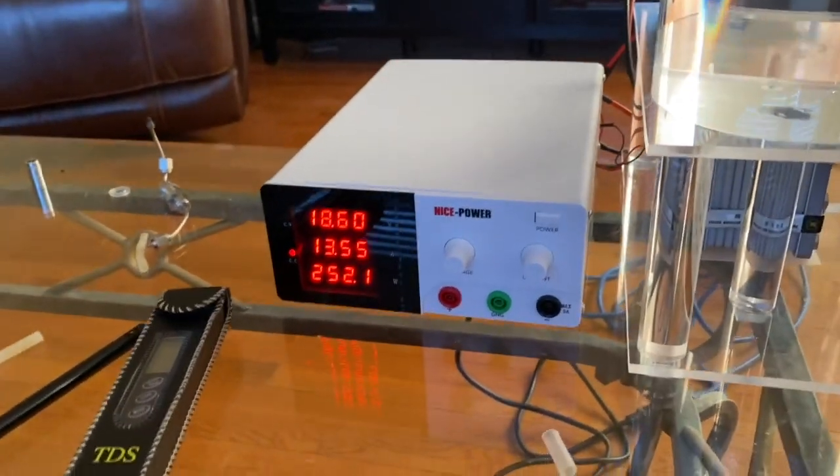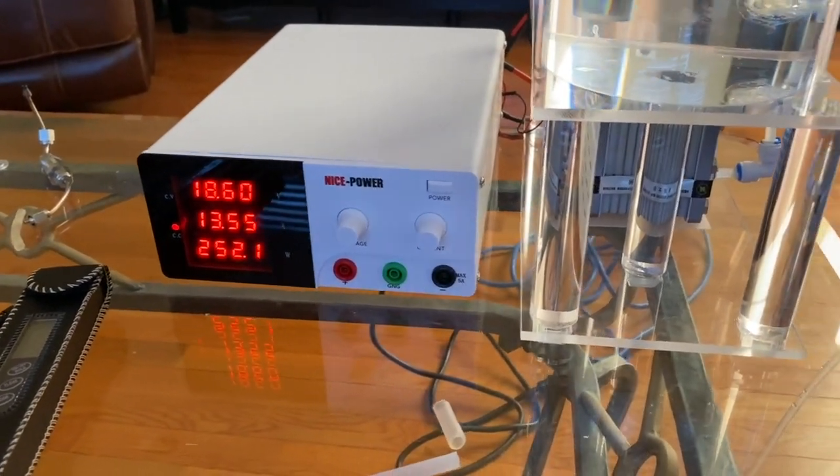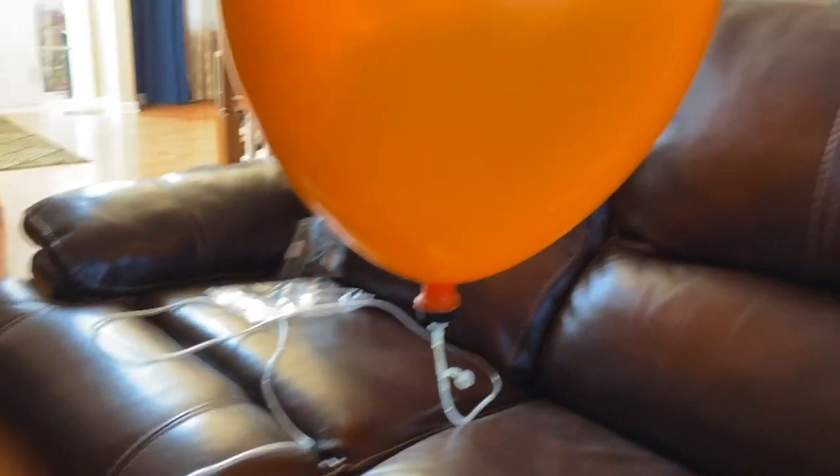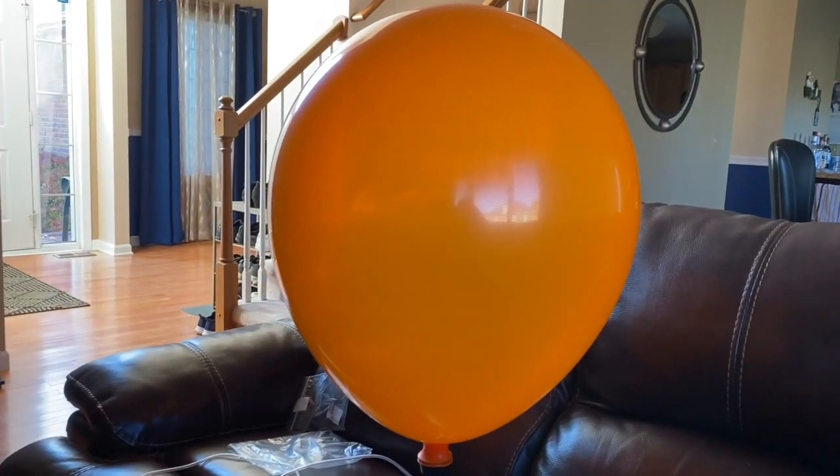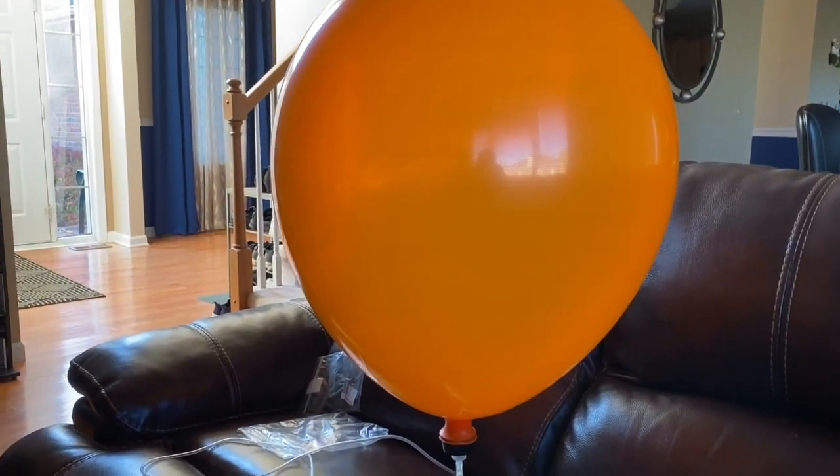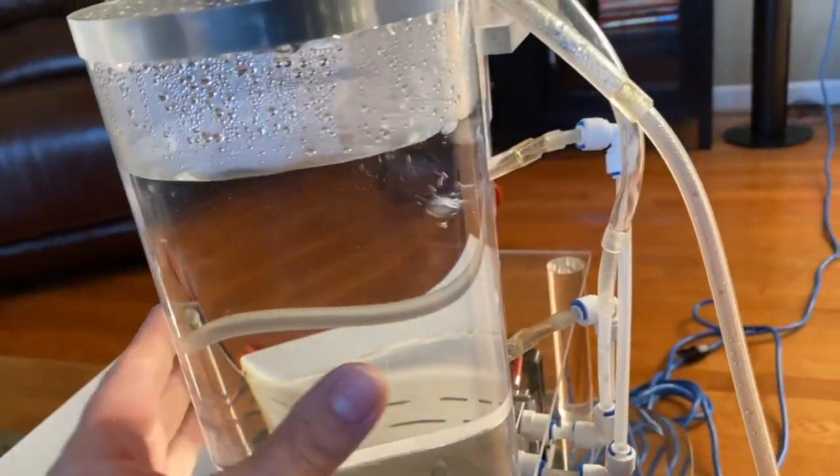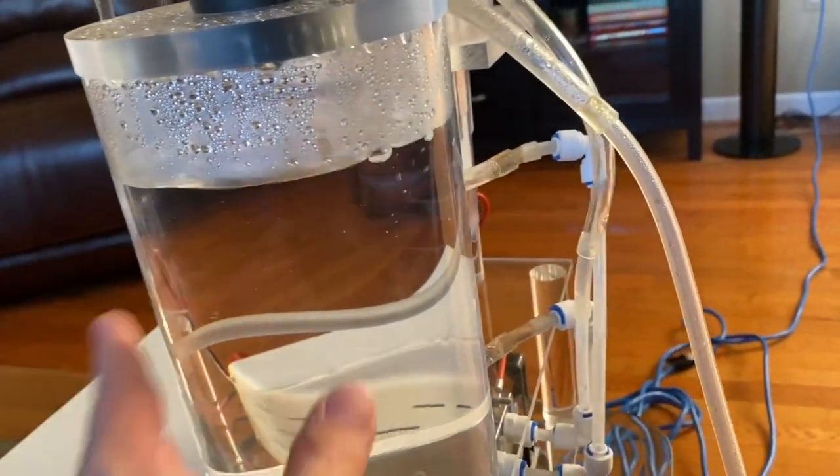So I turned the current down to about a liter a minute and left it for an hour. And this is how big the balloon is now. That's just a liter a minute, so I could do it twice as fast if I wanted to. And at this point, the water is just barely warm to the touch.